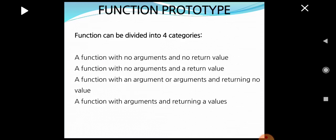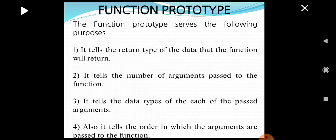The four main categories of function prototype are: a function with no argument and no return value, a function with no argument and a return value, a function with an argument and returning no value, and a function with argument and returning a value. The main purpose of a function prototype is that it tells the return type of data the function will return, the number of arguments passed, the data type of each argument, and the order in which arguments are passed.